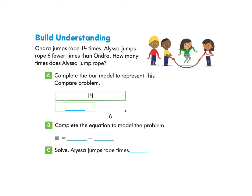We will start under Build Understanding. Andrea jumps rope 14 times. Alyssa jumps 6 fewer times than Andrea. How many times does Alyssa jump rope? Looking at Part A, complete the bar model to represent this compare problem. We have the 14 jumps that Andrea makes and the 6 fewer times that Alyssa jumps from Andrea — the total amount of jumps and the amount less — to find what Alyssa jumps.